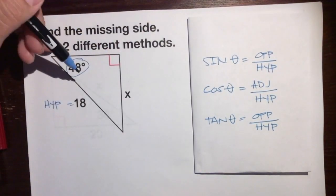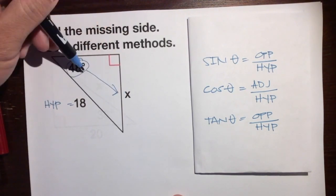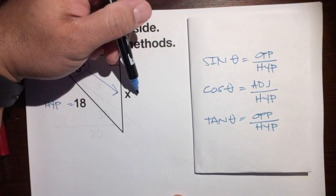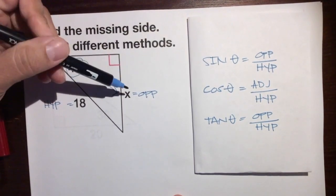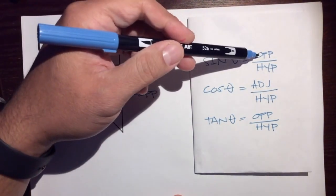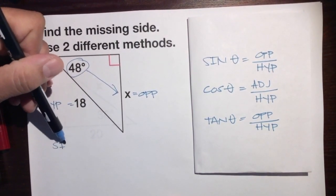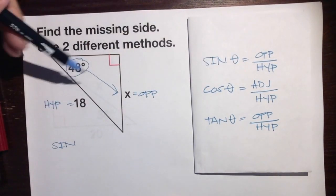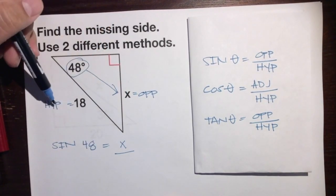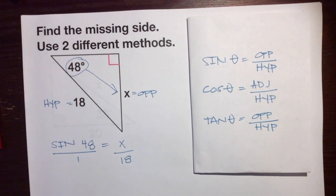Let's see which of the three we're going to use. We have the 48-degree angle and we're trying to find x. x is the opposite side — the 48 is looking right at it. So we have the angle, the opposite, and the hypotenuse. Opposite over hypotenuse means we're going to use sine. Sine of 48 equals x over 18.